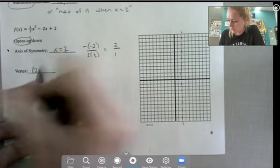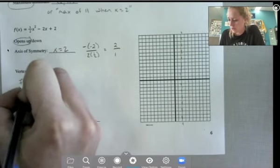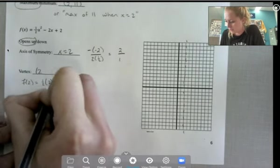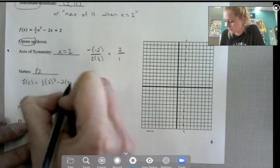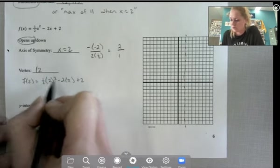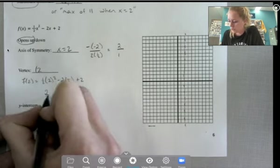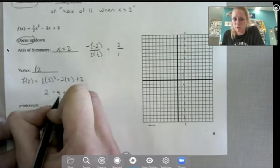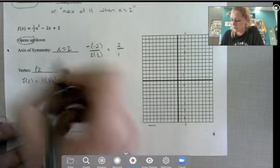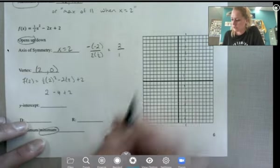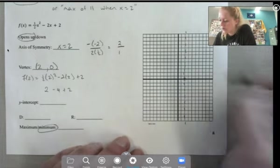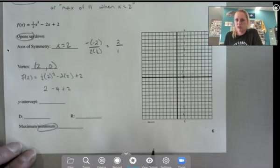Vertex, we're going to find f of 2 to get the y coordinate. So 1 half of 2 squared minus 2 times 2 plus 2, lots of 2's. 2 squared is 4, half of 4 is 2, 2 times 2 is 4, 2 minus 4, negative 2, plus 2 is 0. So 2, 0 is our vertex.